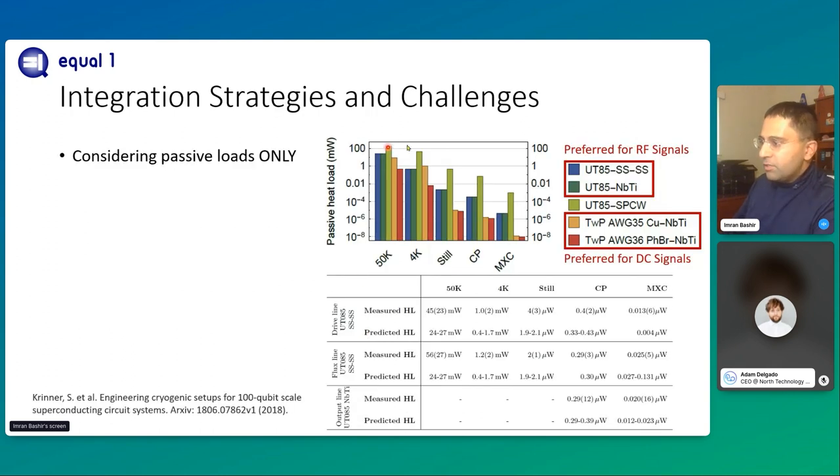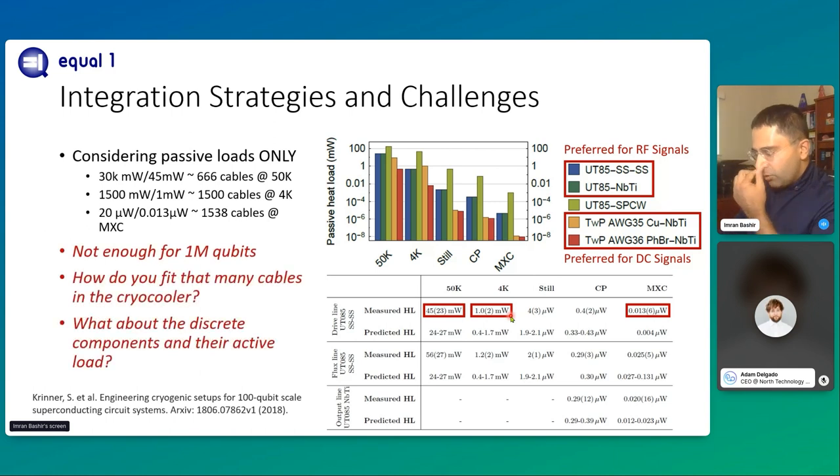For that, we need to go into thermodynamics. We look at this chart here, which basically shows passive heat load measured for each different type of cable at different stages in a dilution fridge. Of these, of interest to us are the stainless steel UT85 cables, which are used for routing RF signals into the cryostat, and then these twisted pair signals, which are routed for carrying DC signals into the cryostat. If we look at our thermal load specification for the stainless steel cable of one milliwatt, and I use it to calculate against the 1.5 watt cooling power I have in my fridge at four Kelvin stage, I can theoretically use 1500 cables before I can hit the thermal load limit at four Kelvin in the dilution fridge.